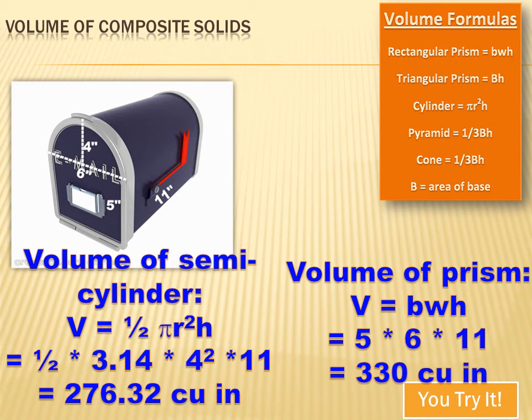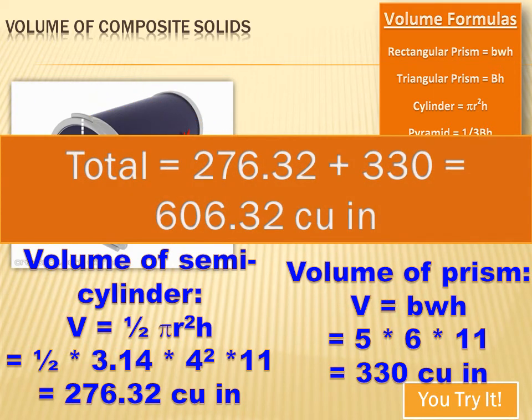Now, let's do the prism. Volume of a prism is the base times the width times the height. The base is 6, the width is 5, and the height is 11. So, the volume of the prism is 330 cubic inches. Now, I've just got to add those two numbers together, and when I do, I get 606.32 cubic inches.